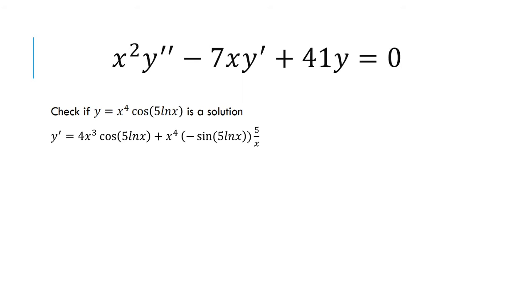For that, the derivative of cosine is negative sine. Leave 5 ln of x alone and take the derivative of 5 ln of x, which is 5 over x. Simplify it, and this is your derivative.